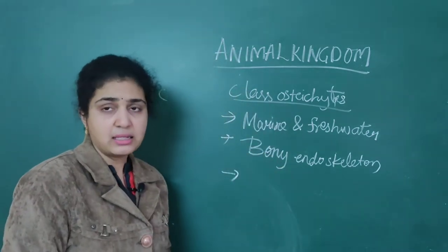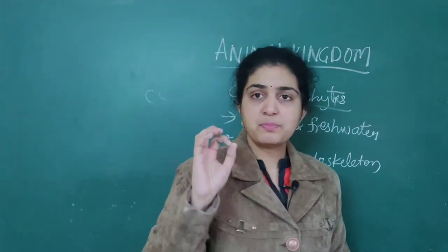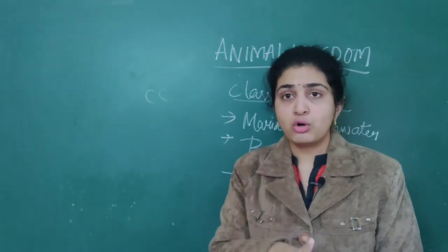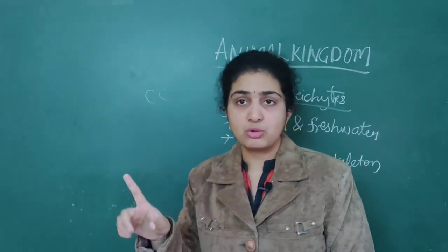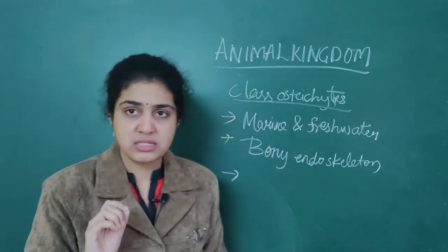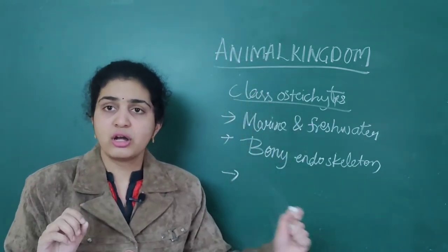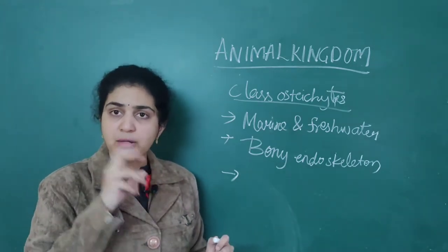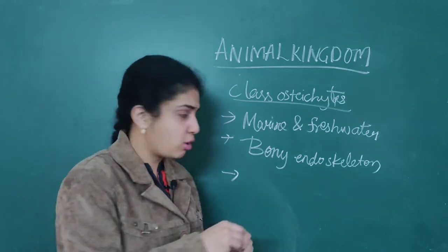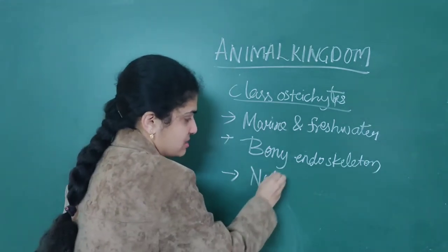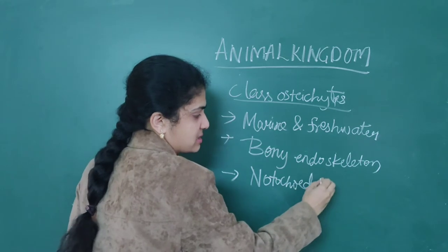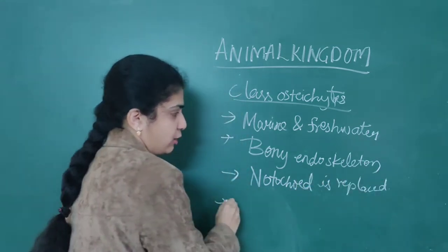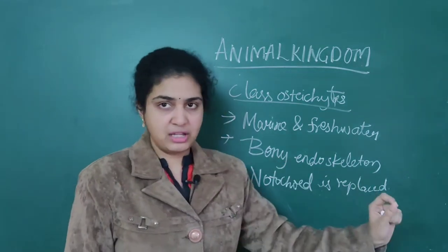Another important point: in Chondrichthyes, the notochord is persistent throughout the life. But for Osteichthyes, the notochord is not persistent throughout the life. Only in the class Chondrichthyes is notochord persistent. In other organisms, the notochord is replaced by bony endoskeleton.